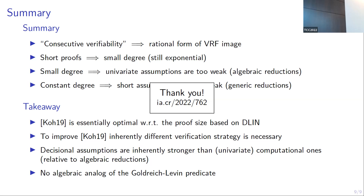Follow-up: What about the generic group model? Response: The second result actually assumes the group is generic — or at least that the reduction is generic. That result only assumes the reduction gives some linear combination of output relative to input, and is independent of the group representation. If there are no more questions, let's thank all the speakers of the session and head out for lunch.